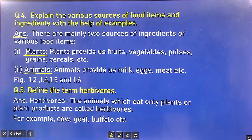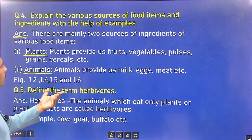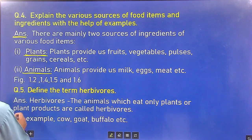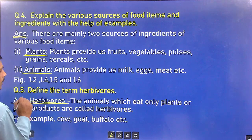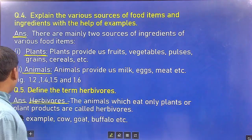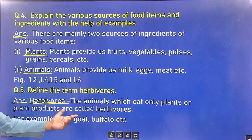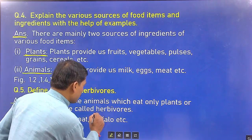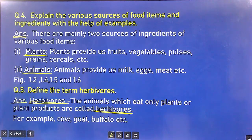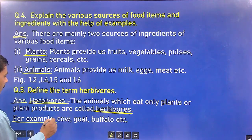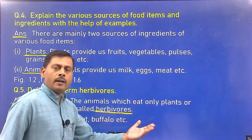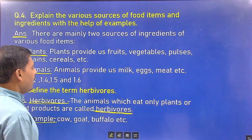Question 5: Define the term herbivores. Answer: The animals which eat only plants or plant products are called herbivores. For example, cow, goat, buffaloes, etc. These are herbivores.